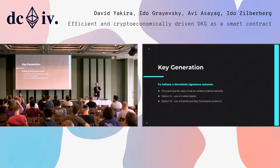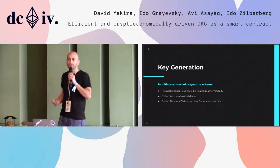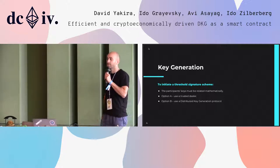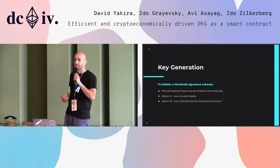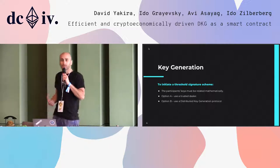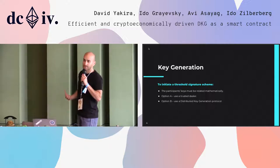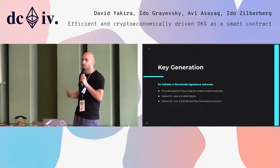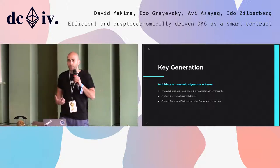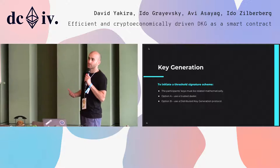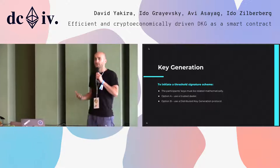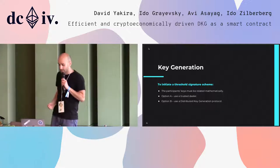As you can probably understand, if you want to have such a scheme, you need the participants' keys to be related mathematically. The participants cannot just generate their keys locally and expect them to somehow work together. So option A — the way to address this — is to use a trusted dealer that would distribute the keys of the participants.